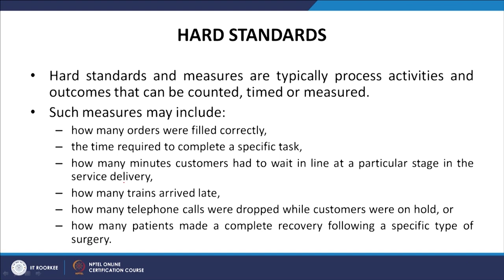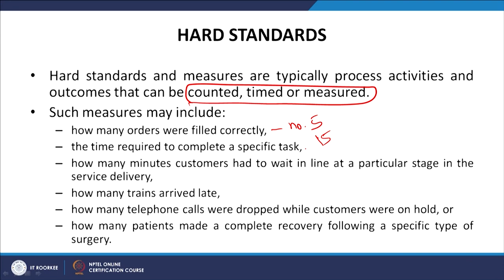Hard standards and measures are typically process activities and outcomes that can be counted, timed and measured. Such measures may include: how many orders were filled correctly, the time required to complete a specific task, how many minutes customers had to wait in line at a particular stage in service delivery, how many trains arrived late, how many telephone calls were dropped when customers were on hold, and how many patients made a complete recovery following a specific type of surgery.